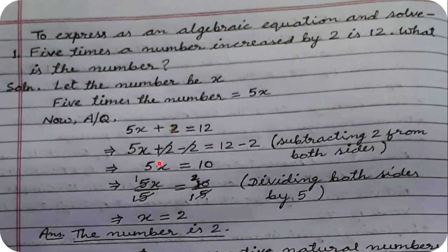To get rid of the 5, we divide both sides by 5. We apply the same operation and same number to both sides so that the equality is not disturbed. 5x divided by 5 cancels the 5, leaving x. 10 divided by 5 is 2. Therefore x = 2, hence the number is 2.